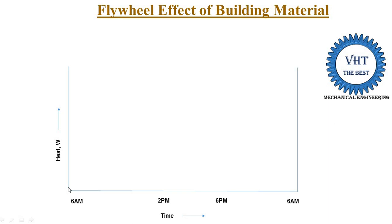At 6 a.m. the sunrise comes and solar radiation starts reaching the earth and our building materials, so the wall starts absorbing heat. At around 2 to 3 p.m., maximum solar radiation reaches the building material, so the wall has absorbed maximum heat. From 6 a.m., the building material has lower heat energy, which increases as more heat is absorbed, reaching its maximum at 2 to 3 p.m. After that, solar radiation intensity reduces, so heat absorption also reduces.